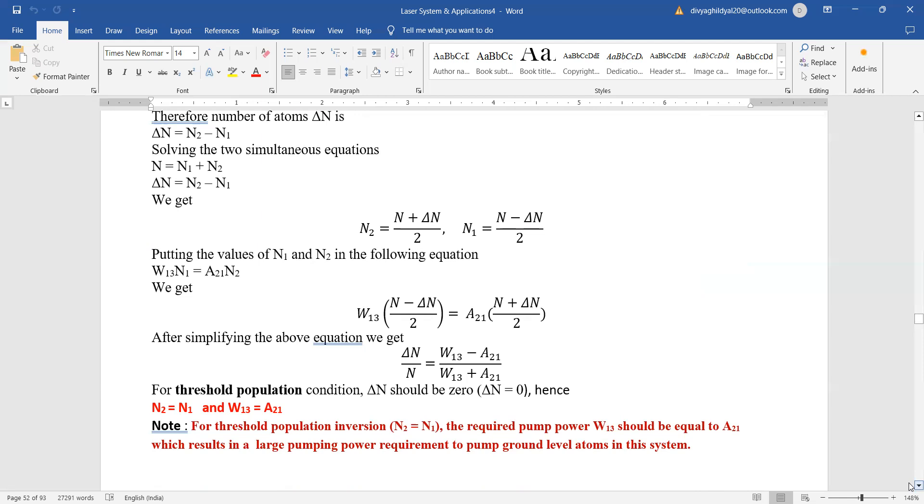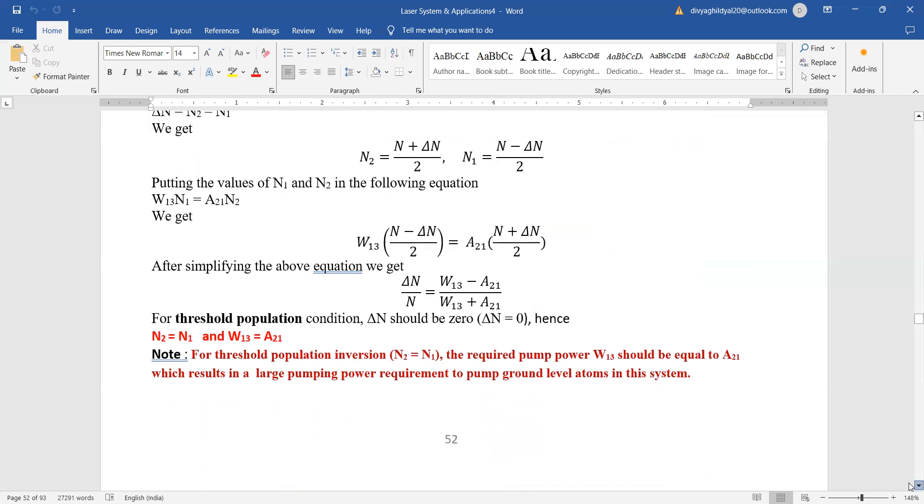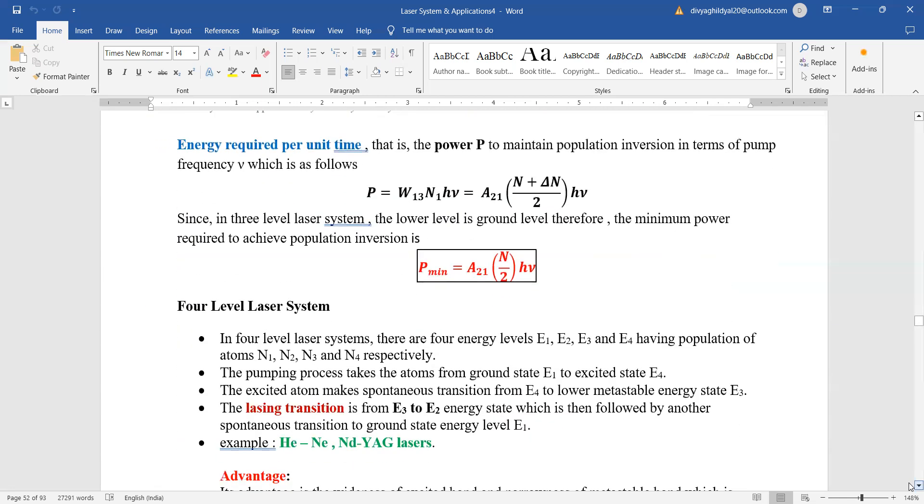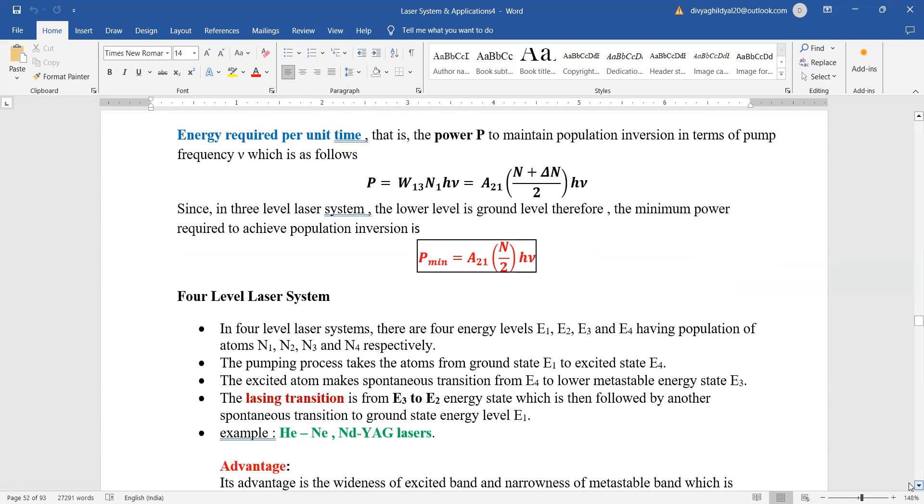Which results in large pumping power requirement to pump ground level atoms in the system. Energy required per unit time, that is power, to maintain population inversion in terms of pump frequency is given by this expression.